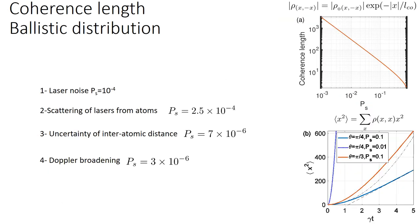The right figure presents the effects of decoherence per step over coherence length and ballistic distribution and considering four major decoherence sources, namely laser noise, scattering of lasers from Rydberg and intermediate level of the atoms, uncertainty of interatomic distance, and Doppler broadening. I use recent experimental results to quantify these decoherence terms, and I can conclude that coherent quantum walks over thousands of steps and thousands of lattice sites is achievable with the current experimental setups.